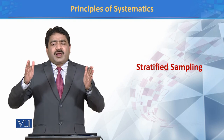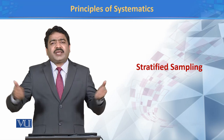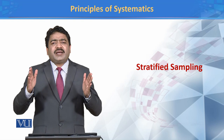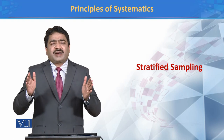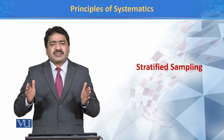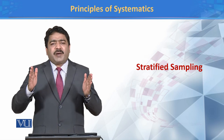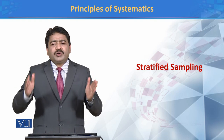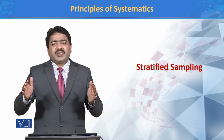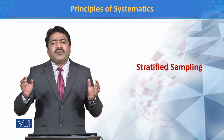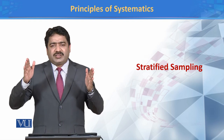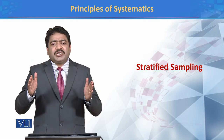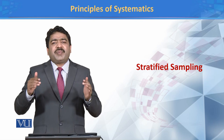इसी तरीके से हम population को weight के हिसाब से, IQ level के हिसाब से, या किसी और criteria की base पर divide कर सकते हैं. तो جو stratified sampling ہے, اس کے اندر ہم اپنی population کو divide کرتے ہیں into various groups — اور ان groups کو strata کا نام دیتے ہیں — then we collect our sample from each strata, from each group randomly. यहाँ पर random selection इस वजह से की जाती है ताके biasness ना आए.